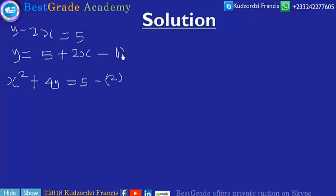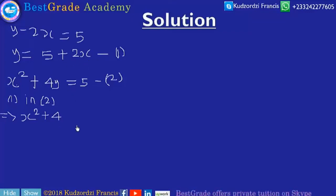Now let's substitute equation 1 into equation 2. Wherever we see Y, we put 5 plus 2X. So we get X squared plus 4 into bracket 5 plus 2X equals 5.